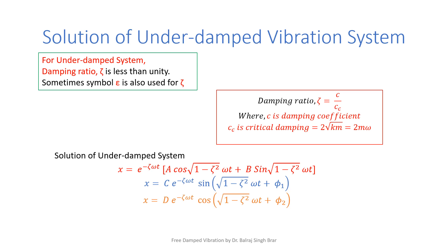The solution of this differential equation for the underdamped vibration system is being revised again. For an underdamped system, damping ratio zeta is less than unity. Sometimes symbol epsilon is also used for damping ratio zeta. Damping ratio zeta is the ratio of C, the damping coefficient, to Cc, the critical damping, and we derived Cc = 2√(km) = 2mω, where ω is the natural frequency ωn = √(k/m).